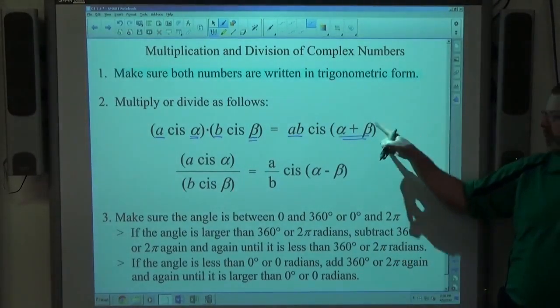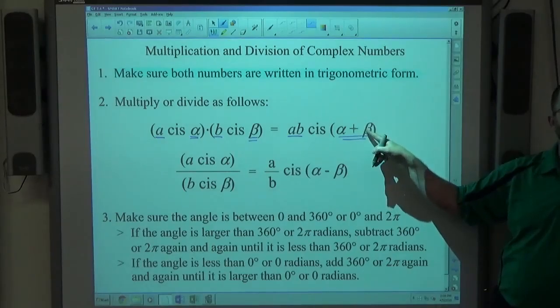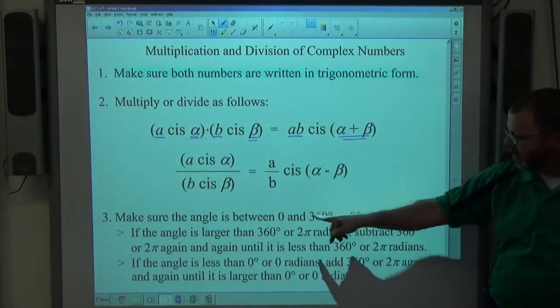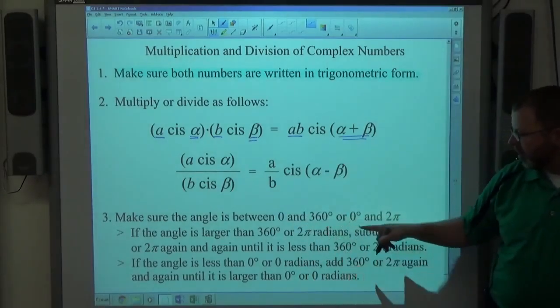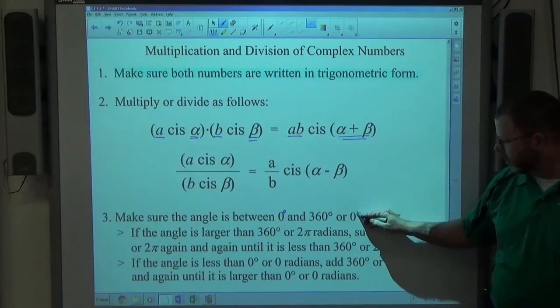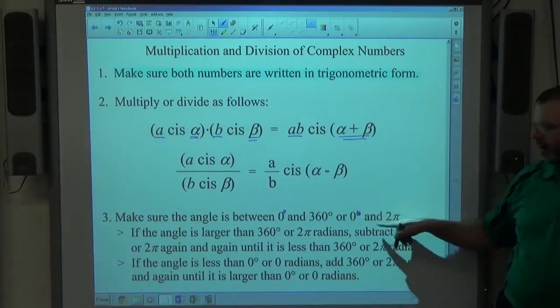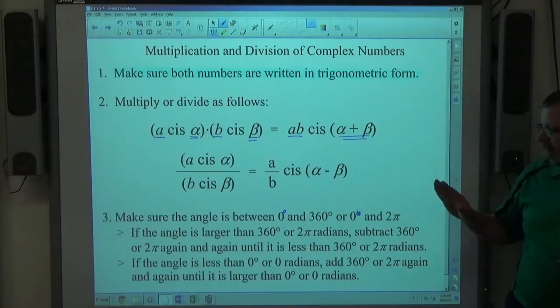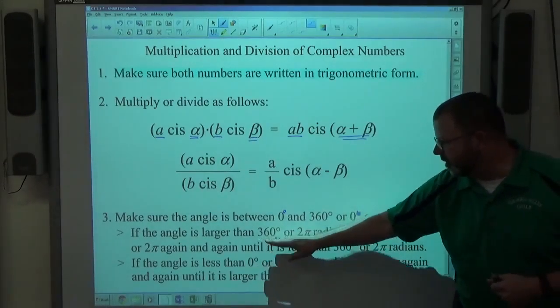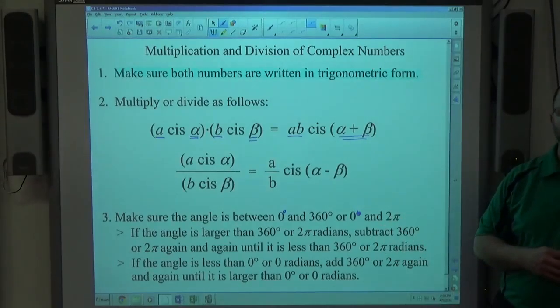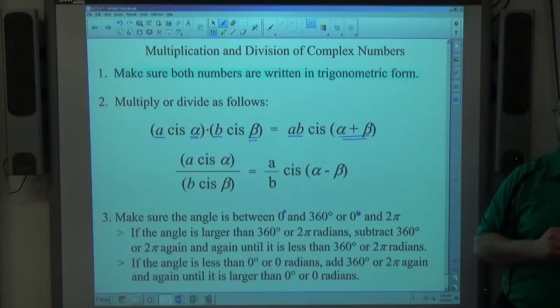When you start adding angles, there's a possibility the angle ends up being bigger than 360 degrees or, if you're in radians, bigger than 2π. If it's between 0 and 360 degrees or 0 and 2π radians, then you're good. If it's bigger than 360 or 2π, you're going to subtract 360 or 2π again and again until it's less than 360 degrees or less than 2π radians.